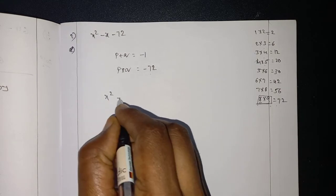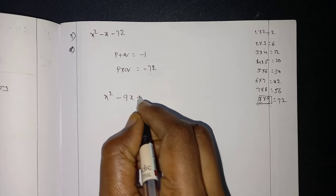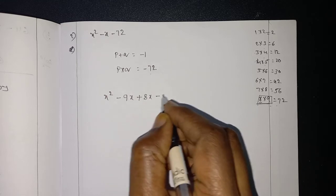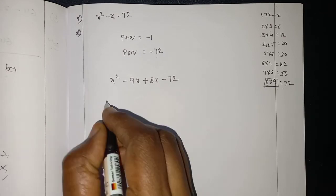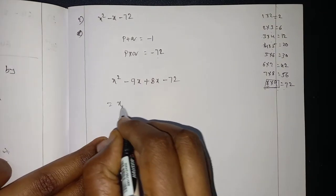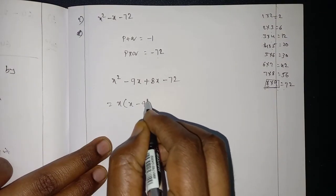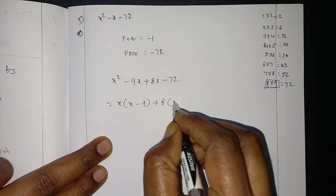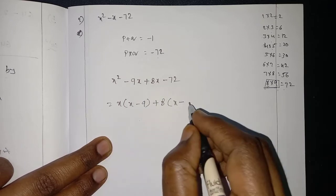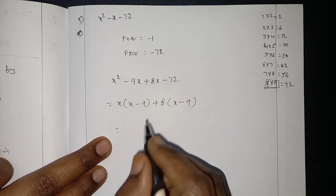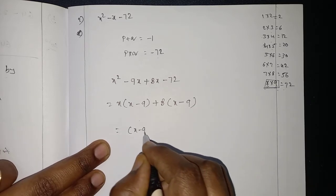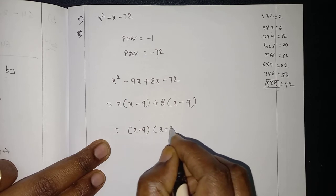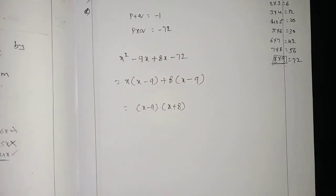x squared minus 9x plus 8x minus 72. Now, taking x as a common, x minus 9 plus, now I am taking 8 as a common, 8 times x minus 9. Again, which is common here? x minus 9. What's remaining? x plus 8.